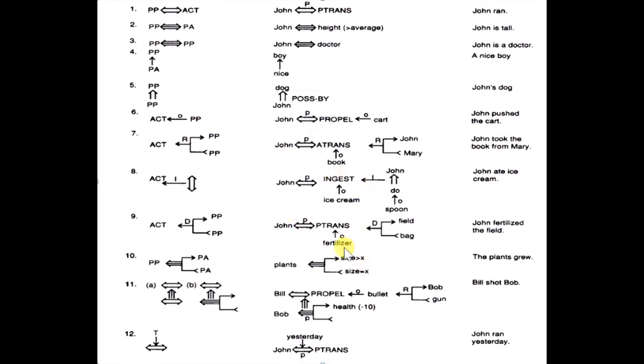In this way, whenever you will get a sentence, first of all, you have to find out the picture producers. Then you have to find out the action, type of action and conceptual cases.